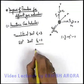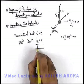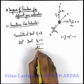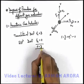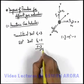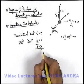So the total degrees of freedom for a monoatomic gas molecule are three.